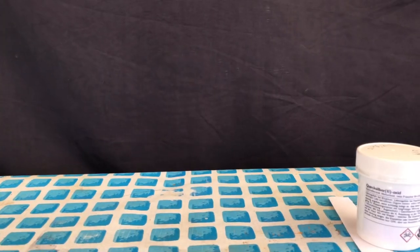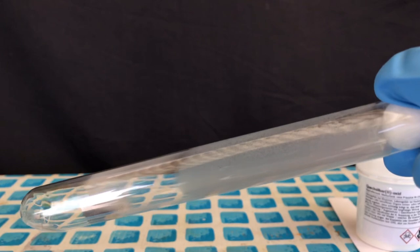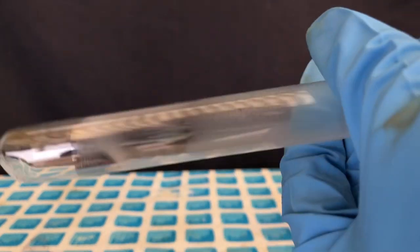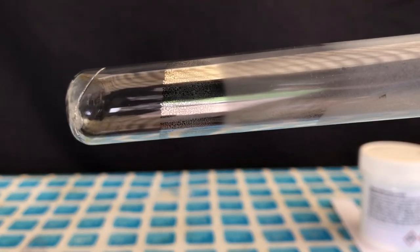At high temperatures, mercury 2 oxide decomposes back into elemental mercury, which settled on the side of the test tube, as you can see here, and oxygen.